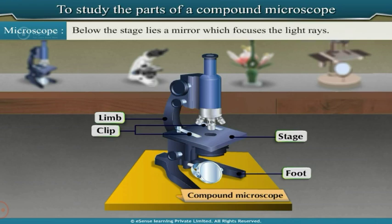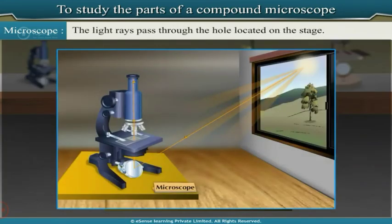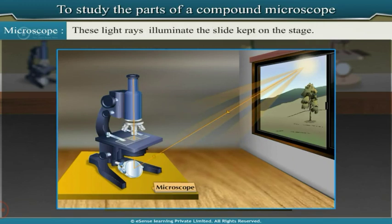Below the stage lies a mirror which focuses the light rays. The light rays pass through the hole located on the stage and illuminate the slide.